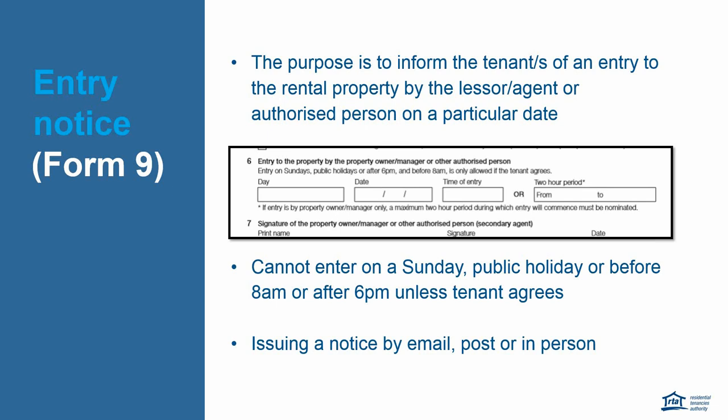If it is the owner or manager entering — say for a routine inspection — you can nominate an actual time or a two-hour period within which entry will occur. Note that the two-hour window doesn't apply for tradespeople. The lessor or agent can enter only between 8 a.m. and 6 p.m., but cannot enter on a Sunday or public holiday unless the tenant agrees. If the tenancy agreement states an agreement to serve by email, you can do so; otherwise you need to post or hand-deliver to the rental property. Remember notices must be clear days, so for a routine inspection by post you must allow postal time plus the seven days required in the Act. Keep a copy of notices served and any documentation of phone conversations or diary notes, particularly if there is an agreed entry.